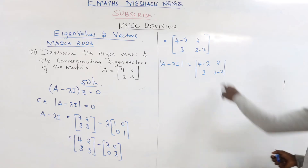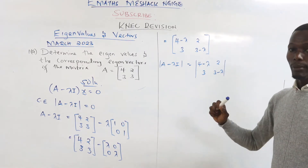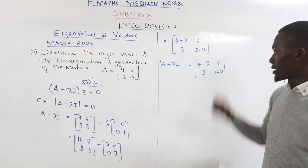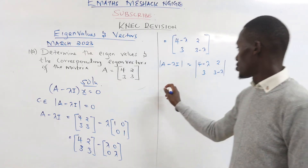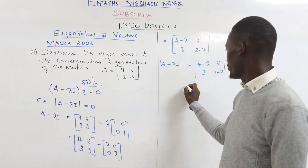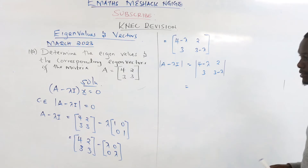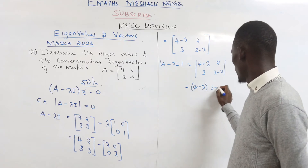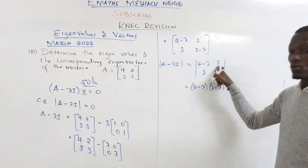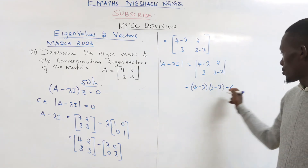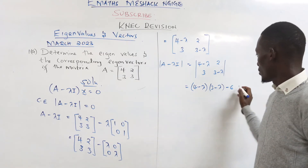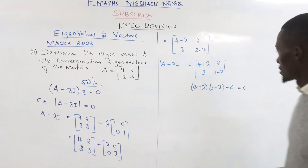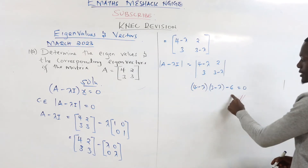To find the determinant, you multiply the elements in the main diagonal and subtract the elements in the other diagonal. So it is (4 minus lambda)(3 minus lambda) minus 3 times 2, which gives minus 6. The whole expression is equated to zero.